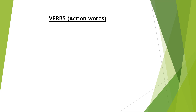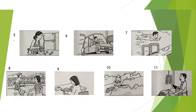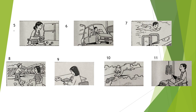What are verbs? Here are some examples: cry, sing, run, park, put, fun. Look at the pictures and see what the people are doing. Those actions are called verbs — dongci. You can tell me what these people are doing in the picture.